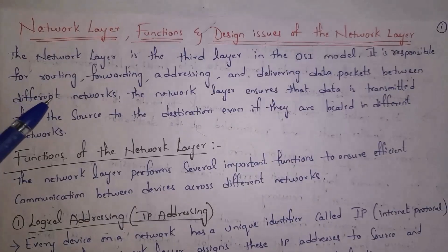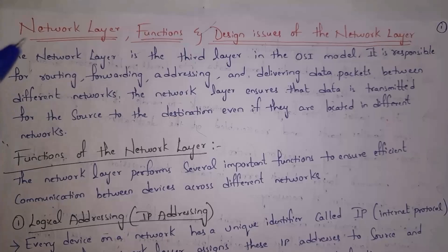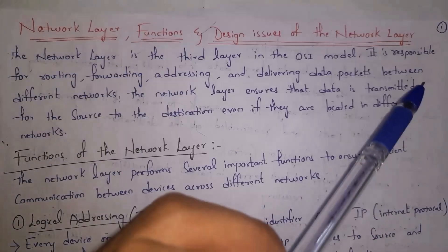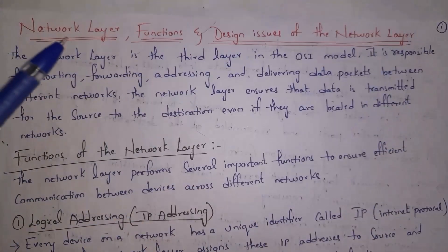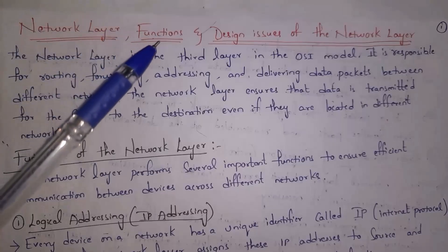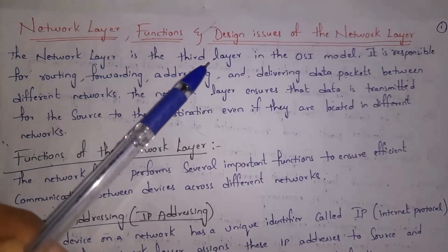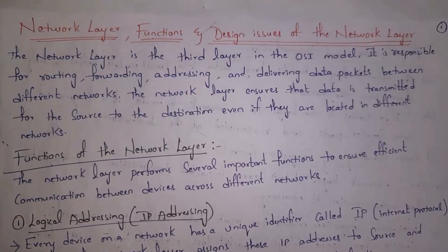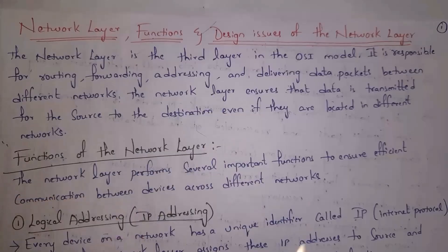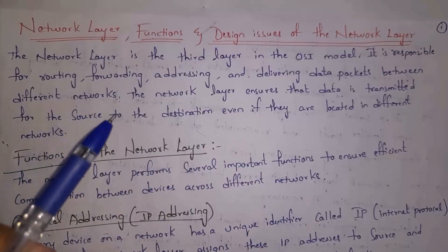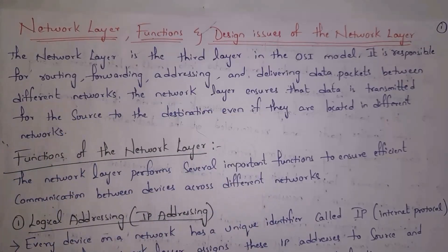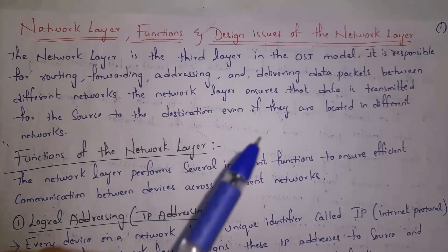The OSI model contains seven layers and the network layer is the third layer from the top. The network layer is responsible for routing, forwarding, addressing and delivering data packets between different networks. The network layer ensures that data is transmitted from source to destination even if they are located in different networks.